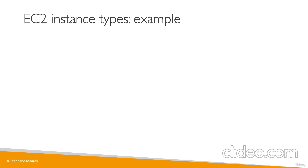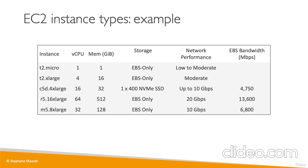What types of instances do we get for EC2? There are hundreds, but here are five examples. The T2 micro has 1 vCPU, 1 gigabyte of memory, EBS-only storage, and low to moderate network performance. The T2 xlarge has 4 vCPU and 16 gigabytes of RAM with moderate network. The C5D 4xlarge has 16 vCPU, 32 gigabytes of memory, 400 NVMe SSD storage, and up to 10 gigabits network. You choose the kind of instance that fits best your application and use it on-demand in the cloud.